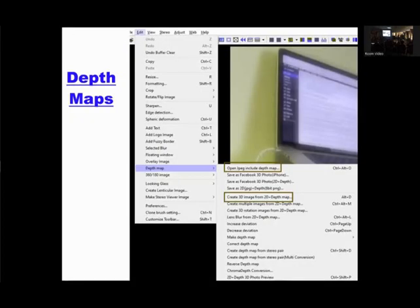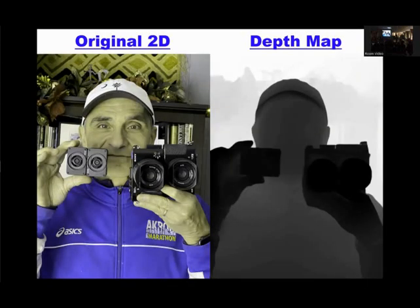Stereo Photo Maker knows how to deal with those files. You take a picture with your iPhone in portrait mode. It's a two-dimensional picture — that's all you see. But if you go under Edit, Depth Map, and open a JPEG file including the Depth Map, you get the original in 2D and the so-called Depth Map. A Depth Map is a grayscale representation of depth — dark means the object is forward, light means it's in the back.